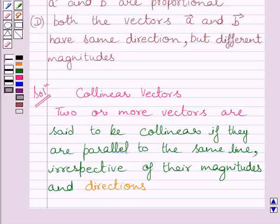Clearly, we can see collinear vectors should satisfy this condition, that is, they should be parallel to the same line. And clearly, we can see here, that collinear vectors can have any magnitude and any direction. They may have same or different directions, they may have same or different magnitudes.